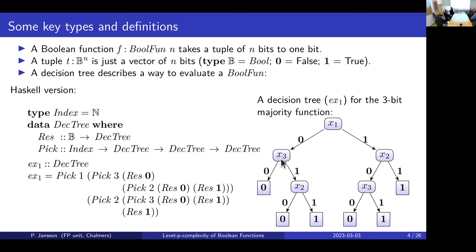When you look at bit 3, if the function computing majority of three bits has already seen two zeros, the majority is already decided, and you shouldn't ask any more questions — you return zero. Otherwise, if you've seen zero and one, you have to look at the third bit as well. Each function has many different decision trees, but each decision tree represents one function — you can compute the boolean function from the decision tree.